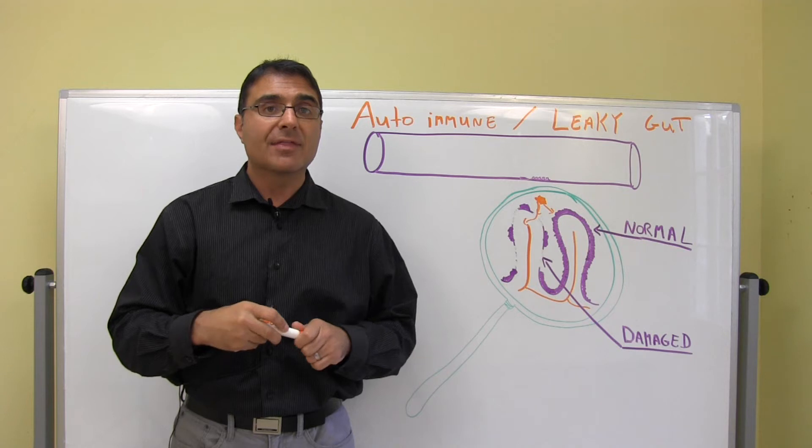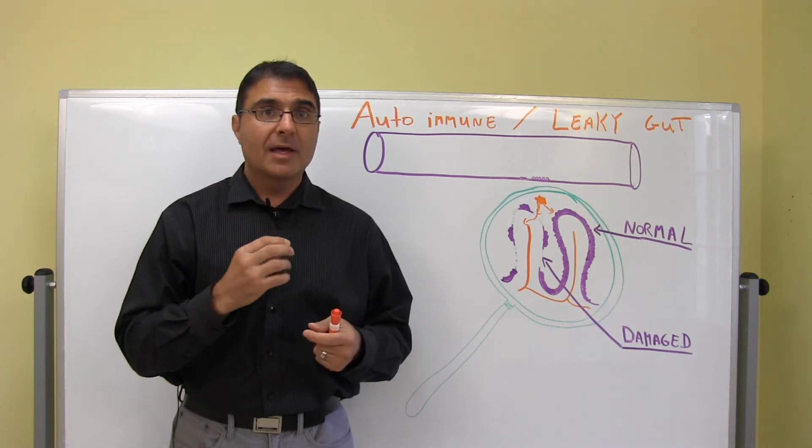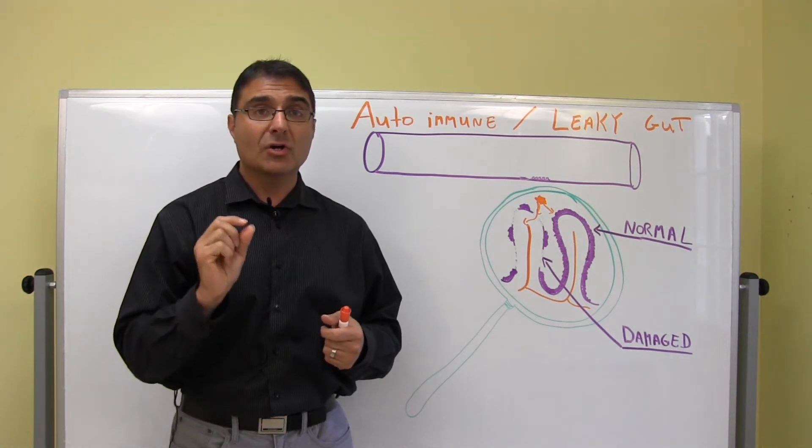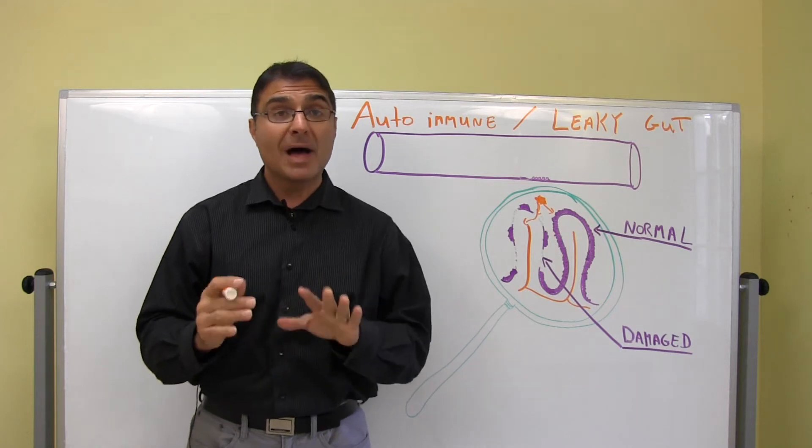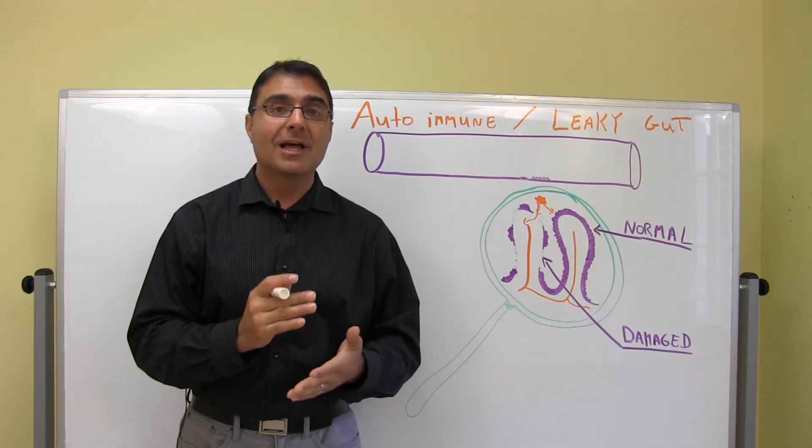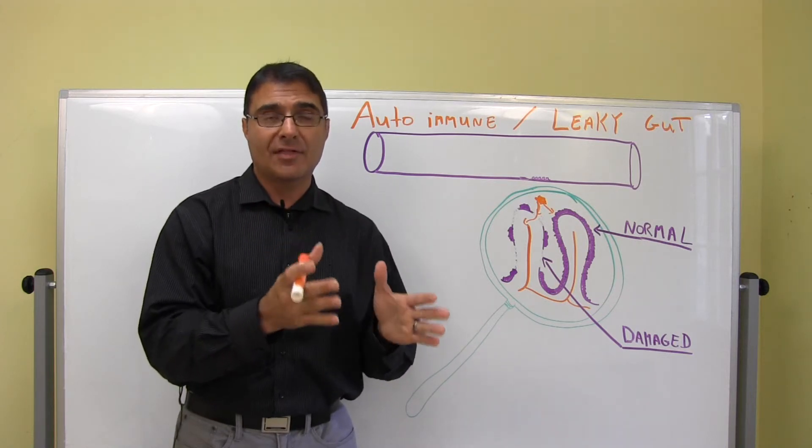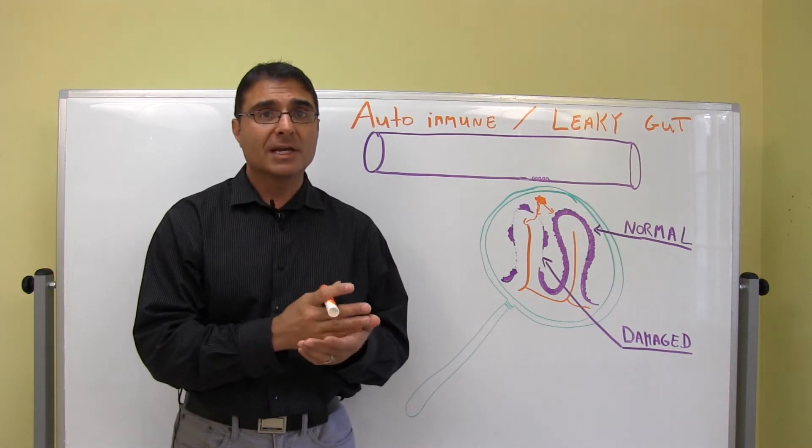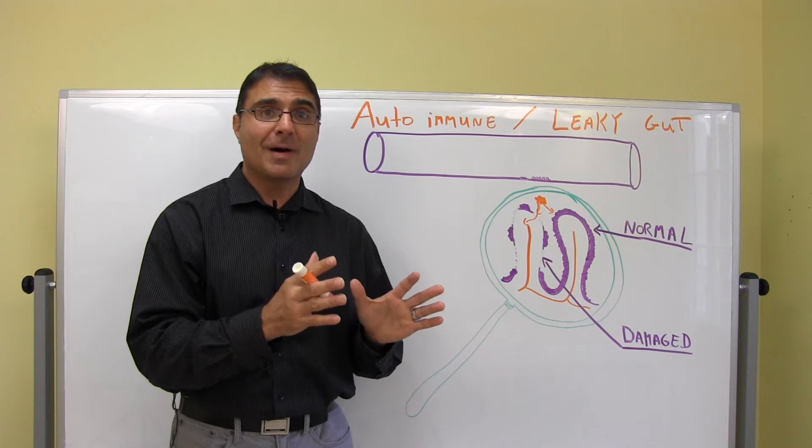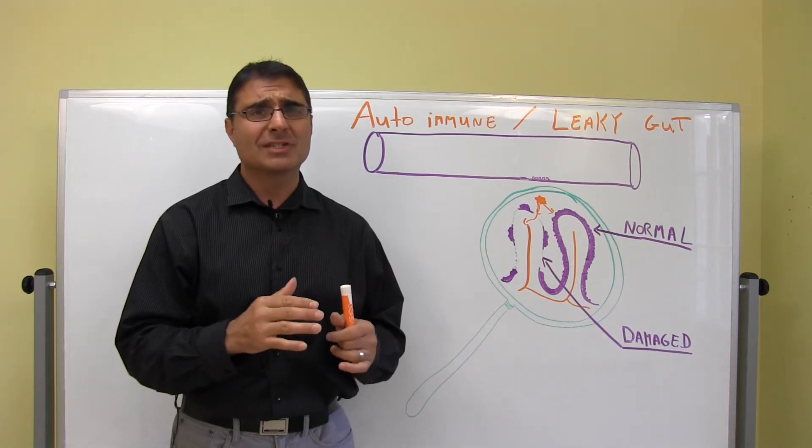When those toxins deposit in the thyroid gland, they can cause the body to start to attack the thyroid gland. And the body's not really attacking the thyroid gland. What the body is doing, it's attacking the toxins that are in the thyroid gland. The problem is the immune system is the part of the body that attacks those toxins.